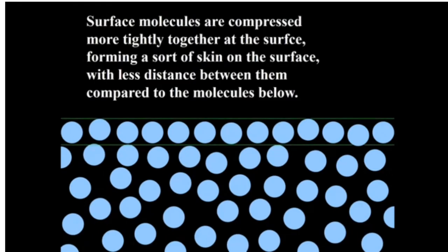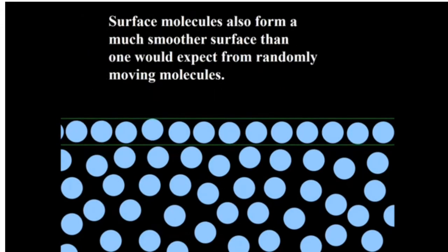The result of this downward force is that surface particles are pulled down until counterbalanced by the compression resistance of the liquid. Surface molecules are compressed more tightly together, forming a sort of skin on the surface with less distance between them compared to the molecules below.